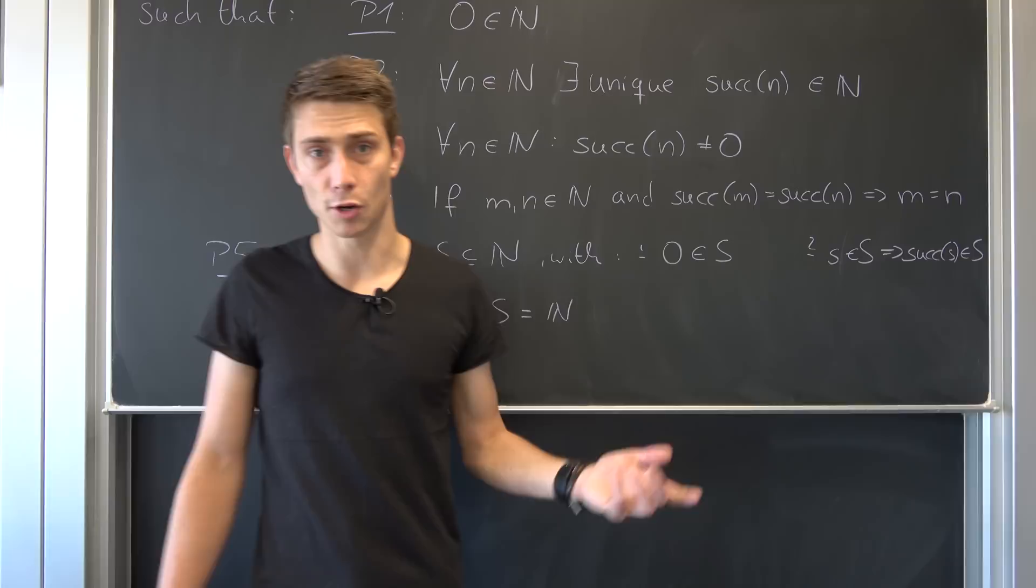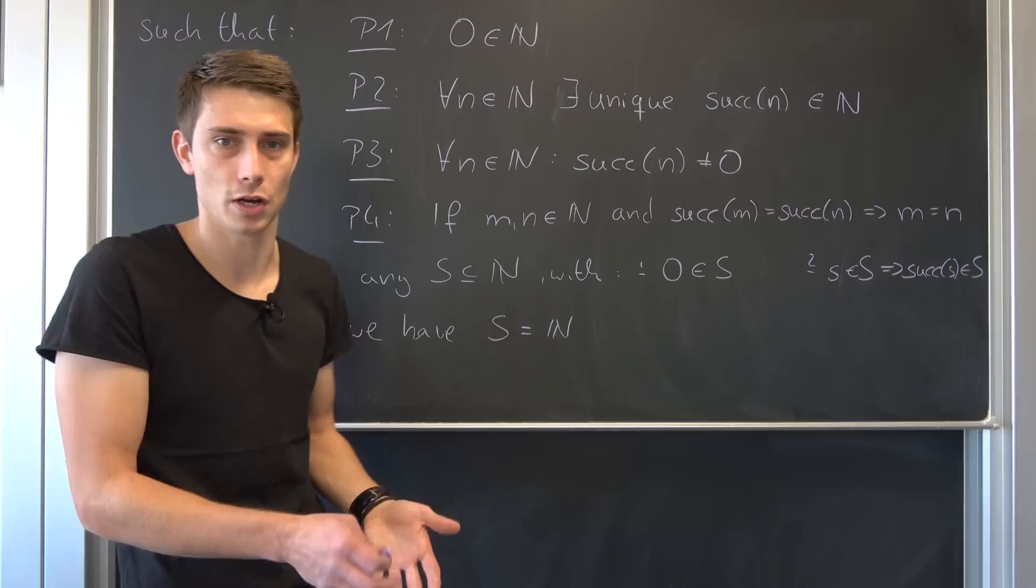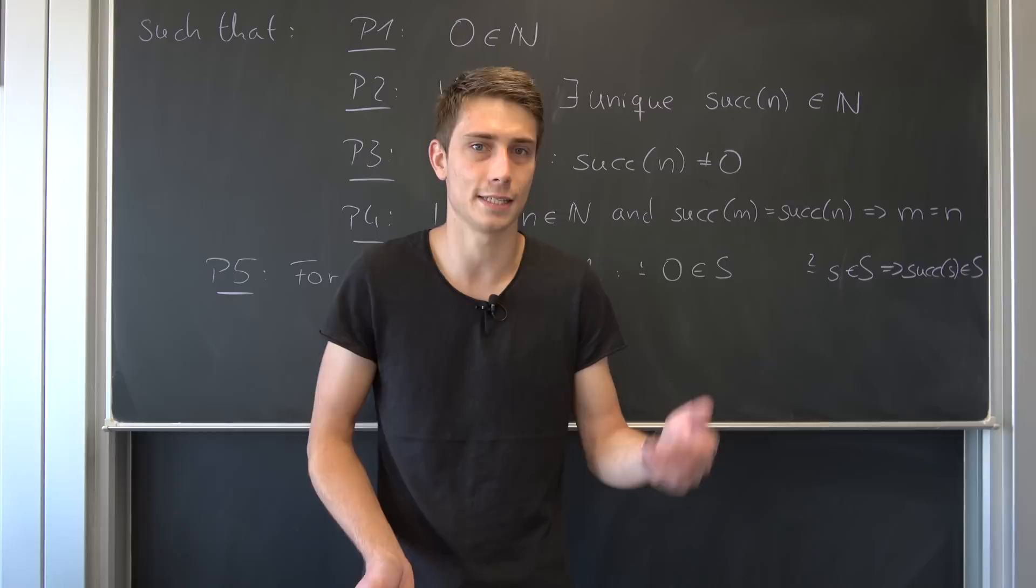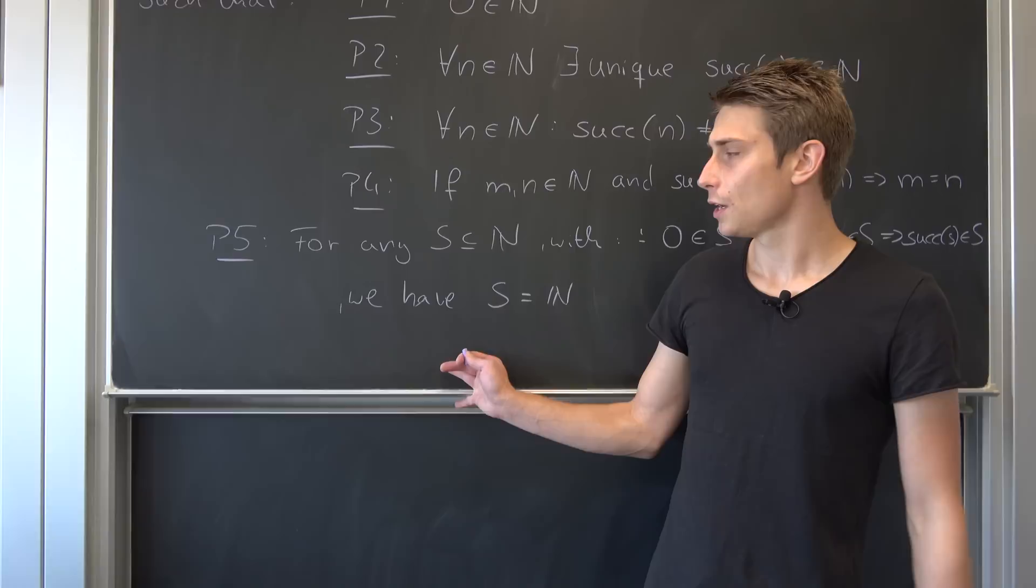Next one, you would call injectivity in the normal case, just meaning well, if we have some M and N element of natural numbers and the successor of M equals to the successor of N, well that just implies that M is equal to N. It does make sense if you think about it. That's how those bad boys right here work.